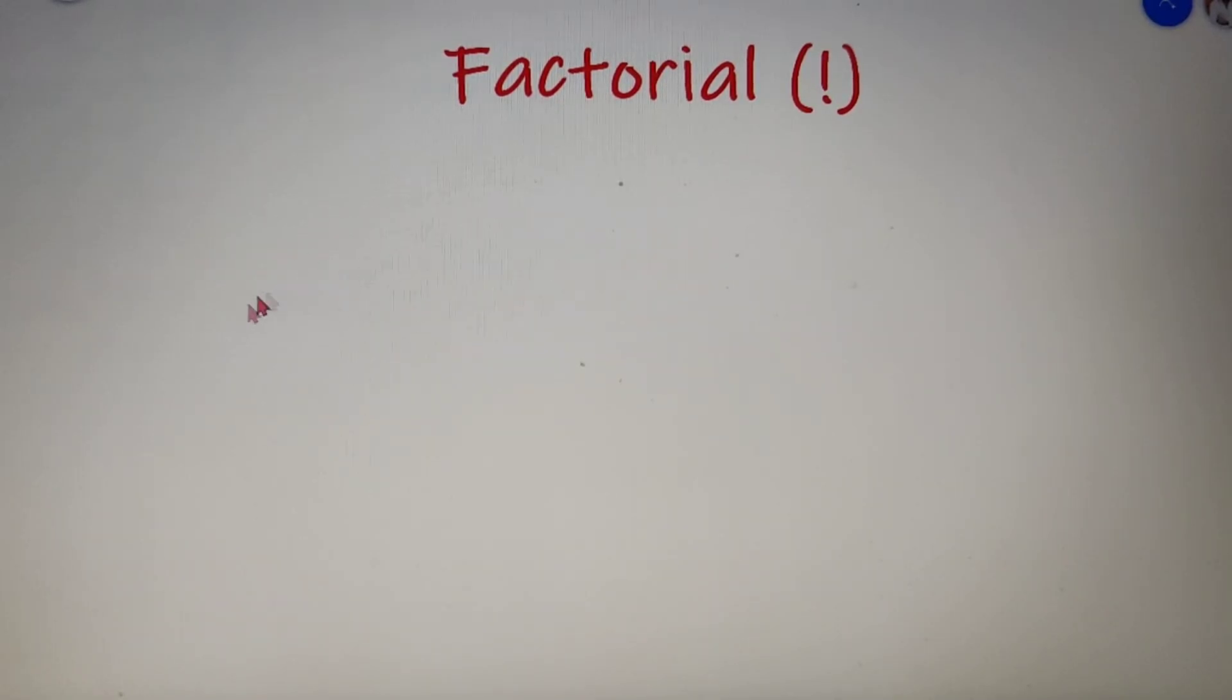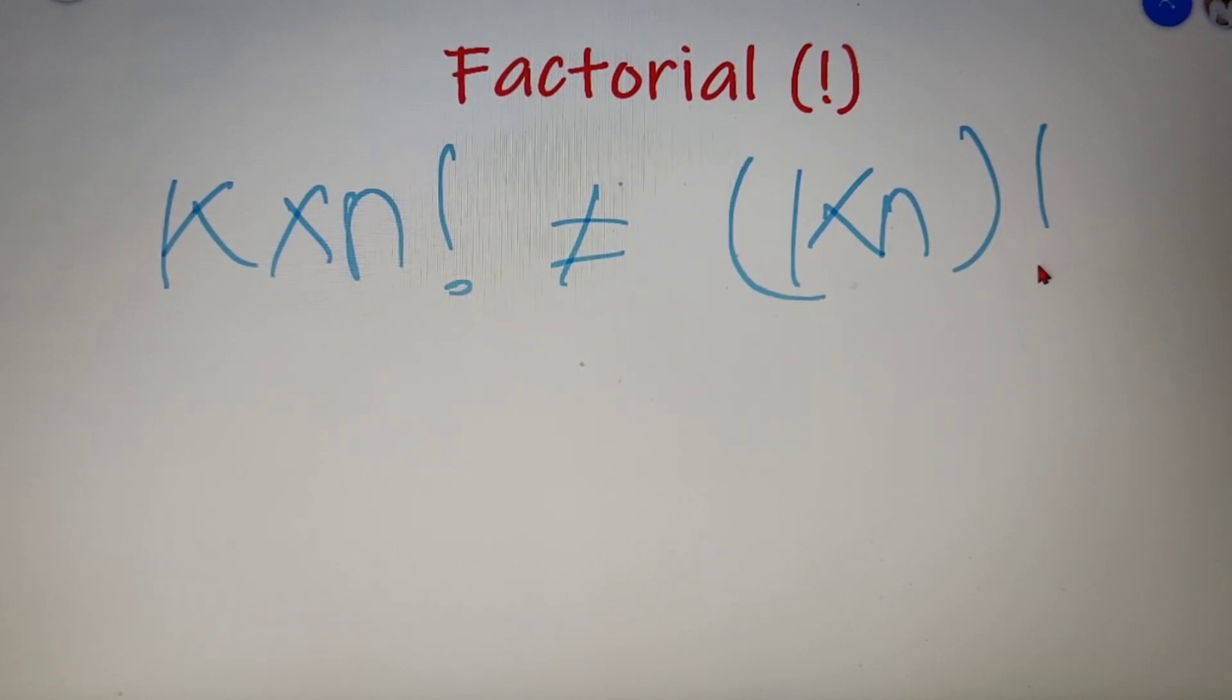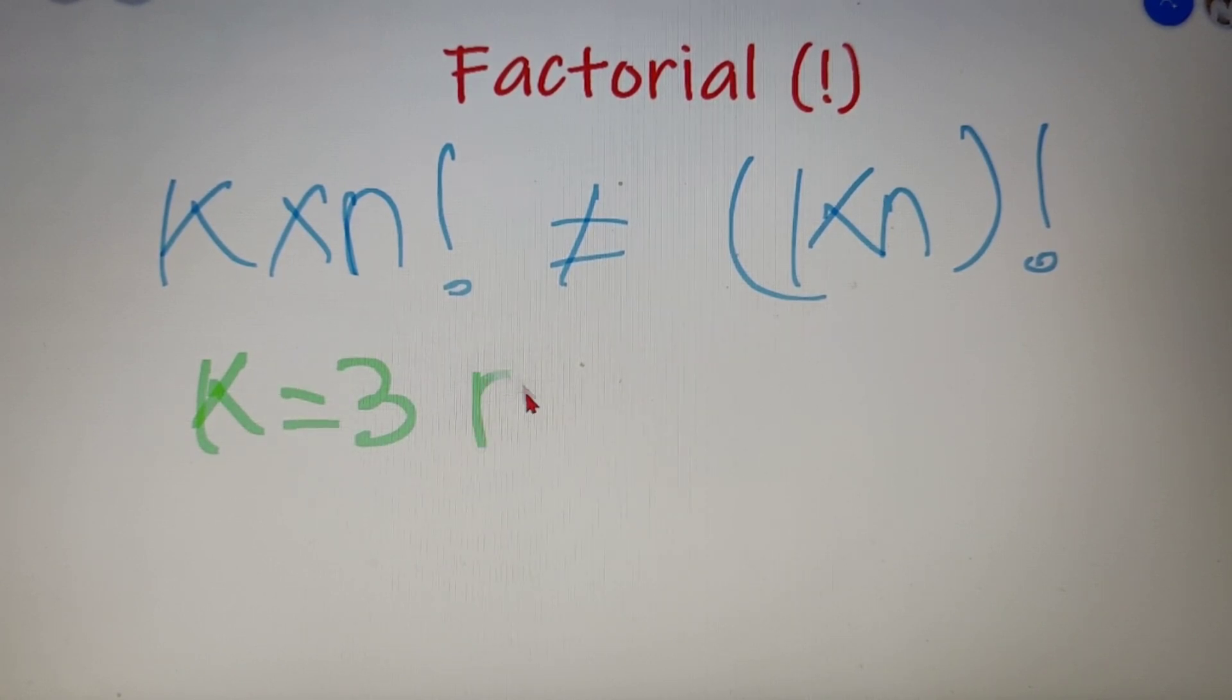Now this is one important point to remember that k into n factorial is not equal to k n factorial. So let's take an example. Suppose the value of k is equal to 3 and the value of n is equal to 2. So I can say that 3 into 2 factorial is not equal to 6 factorial.